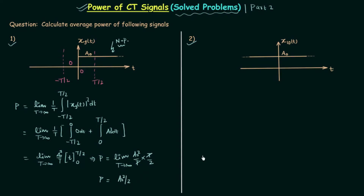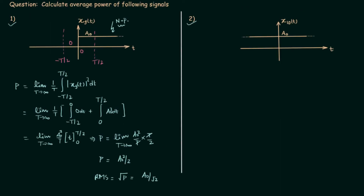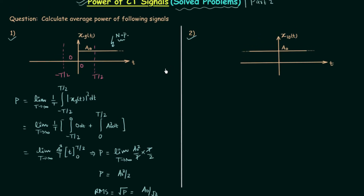Therefore, the average power P equals a0²/2. This is the answer to the first problem. From this we can also calculate the RMS value, which equals the square root of power, giving a0/√2. Although I mentioned in a previous lecture that all periodic signals are power signals, here the step signal is non-periodic yet still a power signal. So it is not the case that only periodic signals are power signals — non-periodic signals can also be power signals.